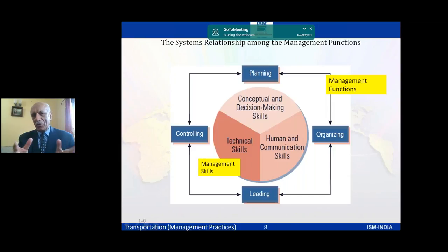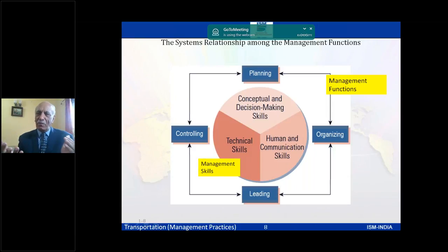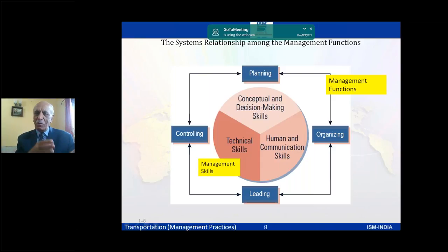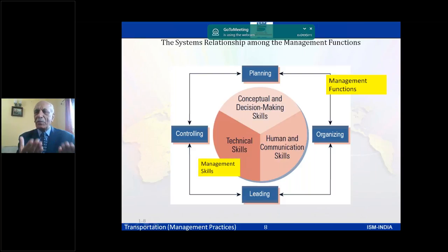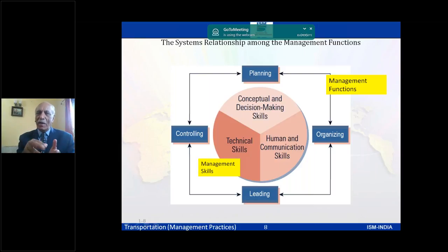The management process links different functions and management skills. It identifies what skills are needed at each level — technical skills, human communication skills, and conceptual skills — and under which management activity each type of skill is most required.